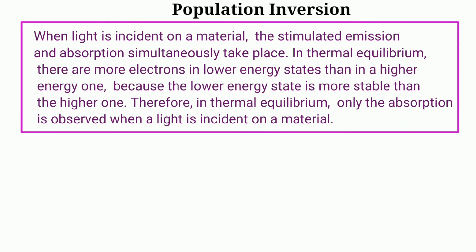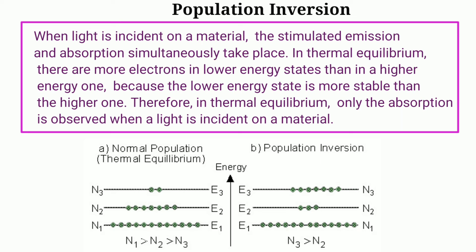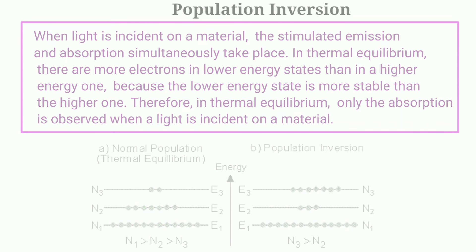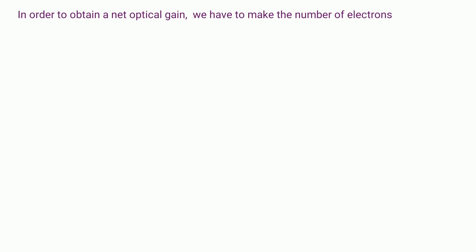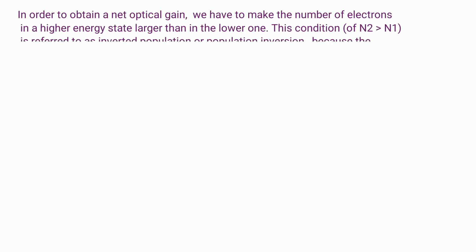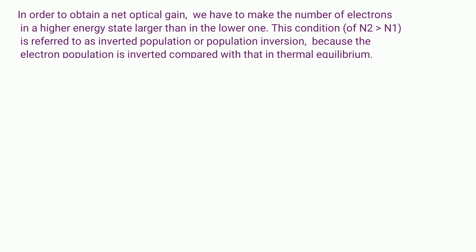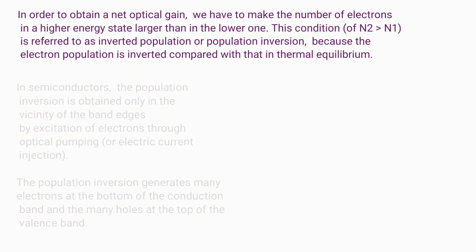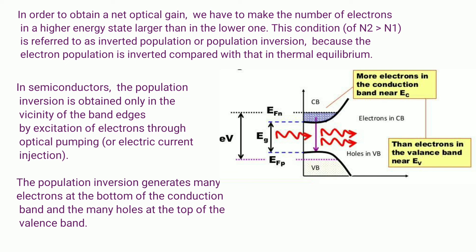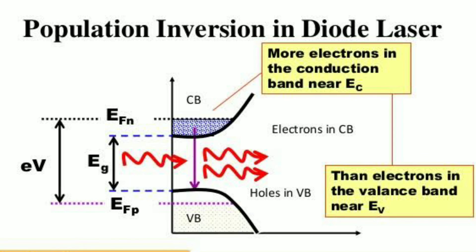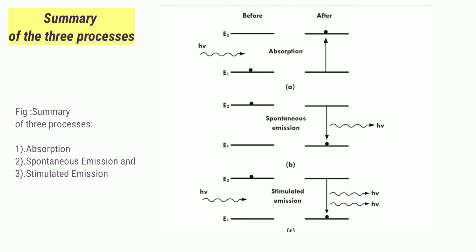When light is incident on a material, stimulated emission and absorption occur simultaneously. In thermal equilibrium, more electrons occupy lower energy states, so only absorption is possible. To obtain net optical gain, we need the number of electrons in the high energy state (N2) to be greater than those in the lower state (N1). This condition, N2 > N1, is called population inversion. In semiconductors, population inversion is achieved near the band edges through optical pumping or electrical current injection, generating many electrons at the bottom of the conduction band and many holes at the top of the valence band.